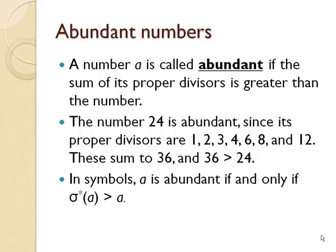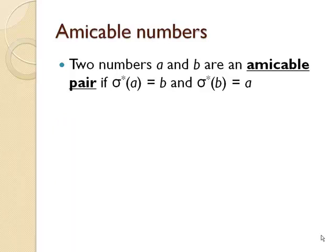A related idea to these things is an idea of amicable numbers, a pair of numbers A and B. They're called amicable, which is another word for friendly, if sigma star of A equals B and sigma star of B equals A.